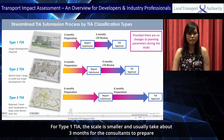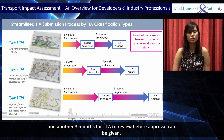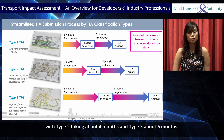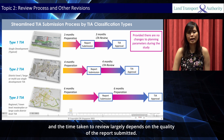For Type 1 TIA, the scale is smaller and usually takes about three months for consultants to prepare and another three months for LTA to review before approval can be given. As the scale gets larger, more time is required: Type 2 takes about four months and Type 3 about six months. The review process includes several iterations between consultants and LTA, and the time taken largely depends on the quality of the report submitted.